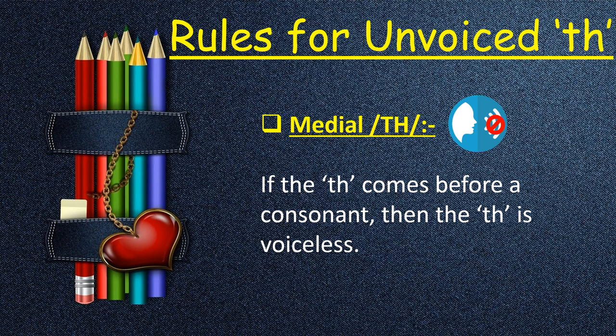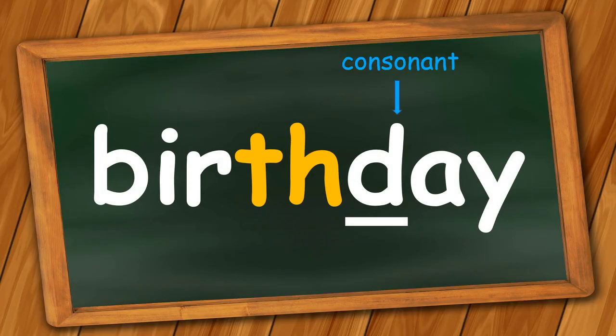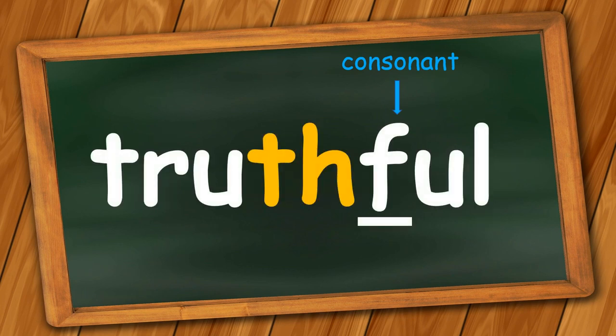Now, rules for the medial voiceless TH words: if the TH comes before a consonant, then the TH is voiceless — that is, unvoiced. For example, 'birthday' — here the TH is voiceless as it comes before the consonant D. Another example: 'worthy,' 'truth.'